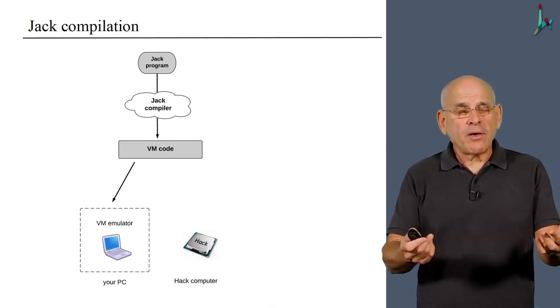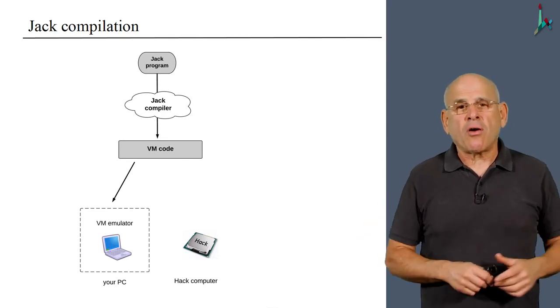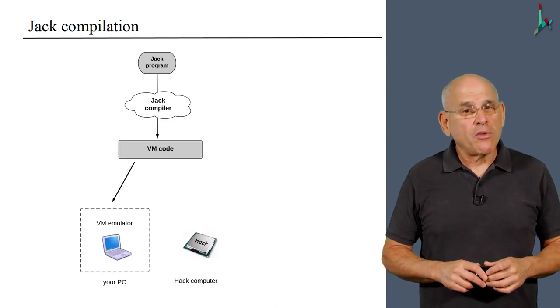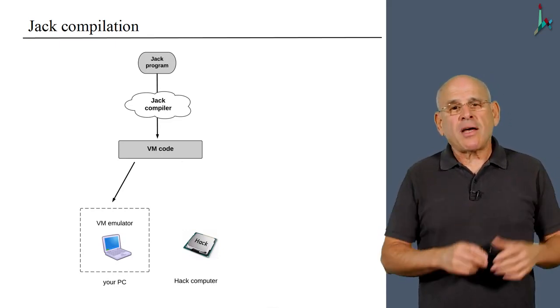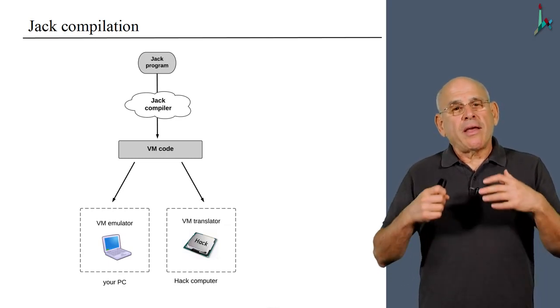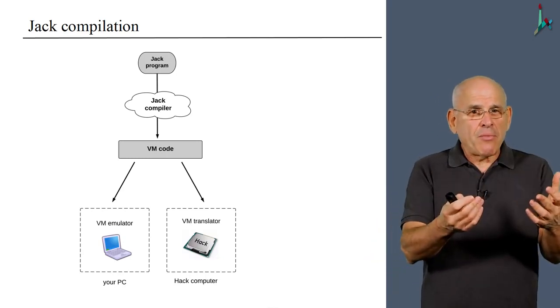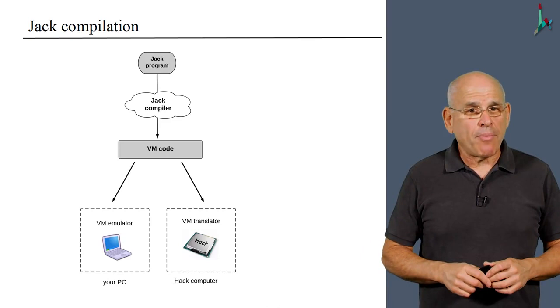So how do we bridge the gap between Jack and these two target platforms? Well, we do something very similar to what we did with Java. We will write a compiler that compiles Jack programs into what we call VM code. Then we'll equip your PC with something called VM emulator, which is a piece of software that knows how to take a VM program and actually execute it on your own laptop or whatever machine you're using. At the same time, and parallel to this approach, we will also write a substantial program, a VM translator, that takes the VM code and translates it into the machine language of the hack platform.